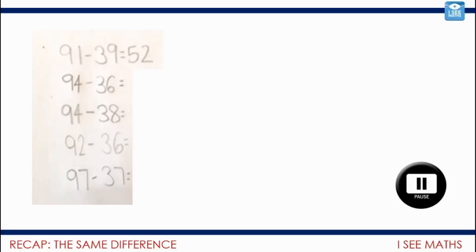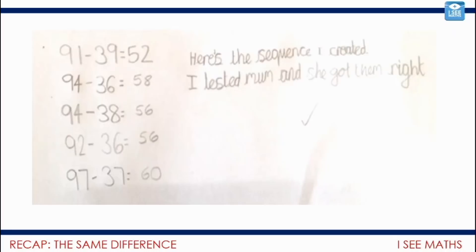Let's check how we got on. Well done — all the answers are right. So 91 to 94, that's 3 more. 39 to 36, we're taking away 3 less. So the answer is 6 more. On this example, we're subtracting 2 more, so the answer is 2 less. Here, for both of the numbers, we're subtracting 2 less, so the answer is the same — the difference stays the same. And then this last one: the amount that we have is 5 more, and we're subtracting 1 more, so in total 4 more. Love that example — thank you.